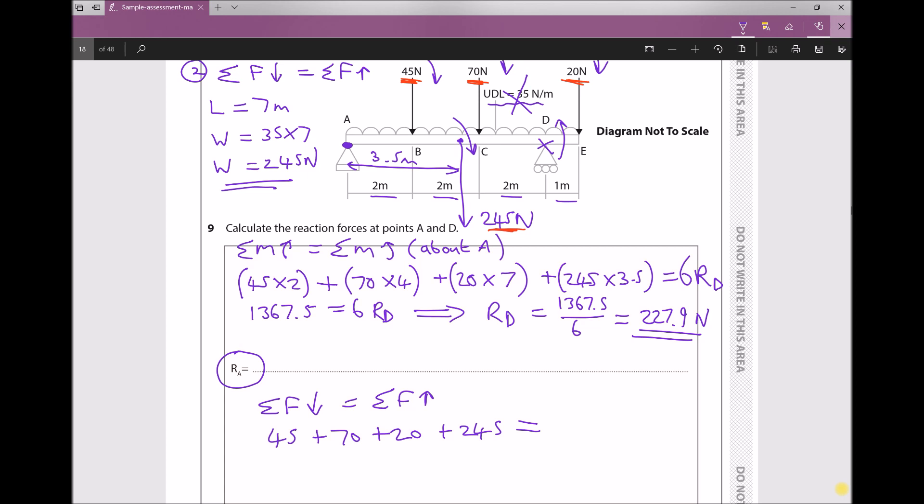And that equals the forces pushing up. Well let's have a look here. We only have two forces pushing up. We have the force at support A, and we have the force at the right hand side, or the force at support D. So RA + RD.